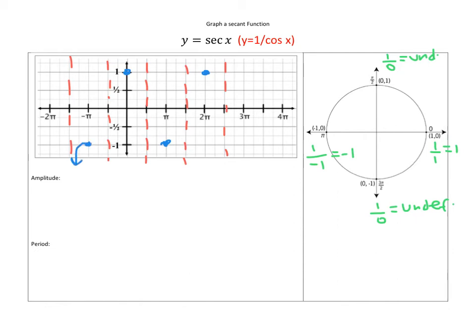Then I just need to connect these, making sure it's not touching the asymptote. That's how the graph is going to look.